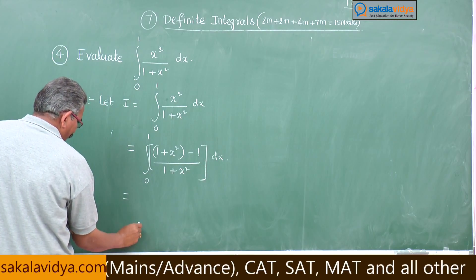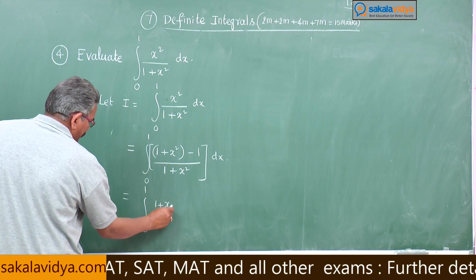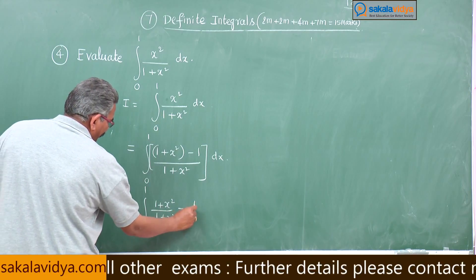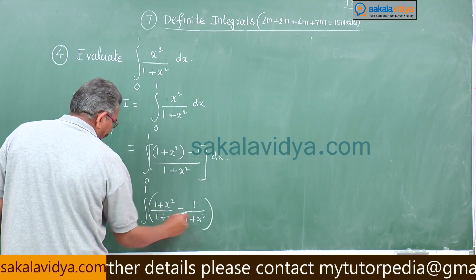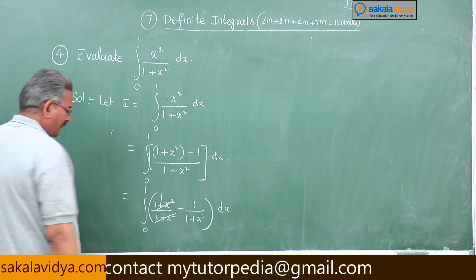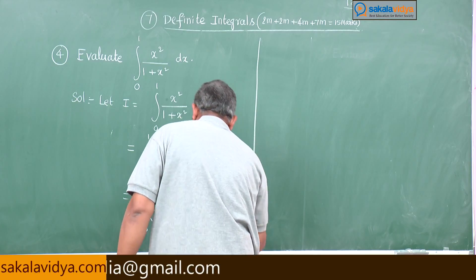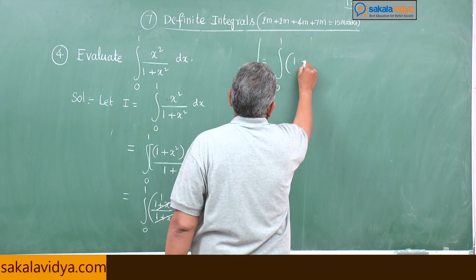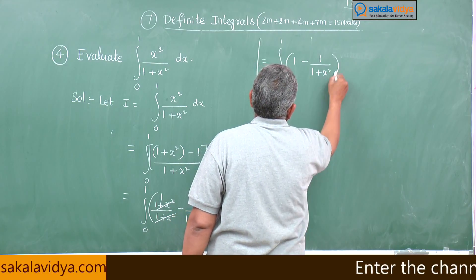Now, this is equal to integral 0 to 1 of (1 plus x squared) by (1 plus x squared) minus 1 by (1 plus x squared) dx. The (1 plus x squared) terms cancel, giving integral 0 to 1 of (1 minus 1 by (1 plus x squared)) dx.